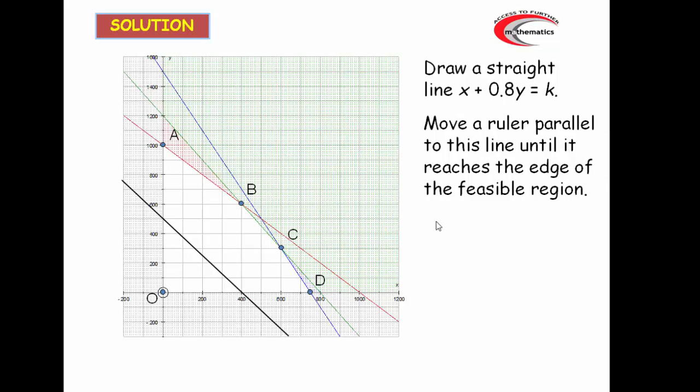So there's our objective function line. If we now move it parallel until it meets the last point as it leaves the feasible region, that will give us the maximum. And we can see there that it's the point B. That's the furthest point. That's the solution. Use simultaneous equations to work it out. But you can see from the graph here that it's at 400, 600. And we've solved enough of those problems.